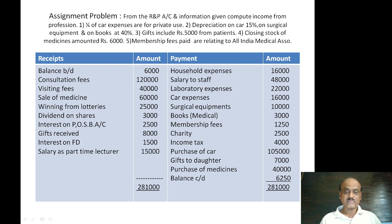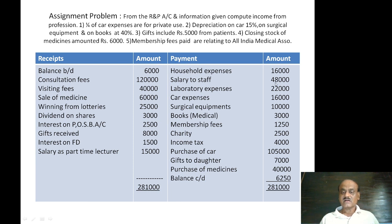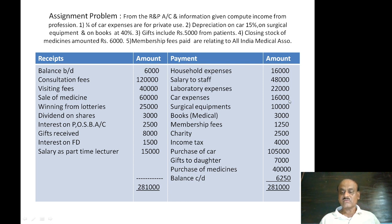Payment side: household expenses Rs. 16,000; salary to staff Rs. 48,000 (allowable professional expense); laboratory expenses Rs. 22,000 (allowable); car expenses Rs. 16,000 — one-fourth is private use, so Rs. 4,000 is private (disallowable) and Rs. 12,000 is professional expense. Surgical equipment is capital expenditure — not directly deductible, but depreciation is allowable. Books for medical use — depreciation is allowable. Membership fee to All India Medical Association Rs. 1,250 — allowable professional expense.